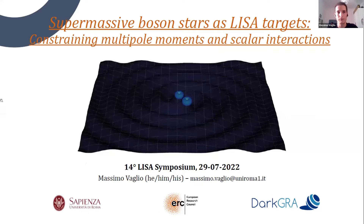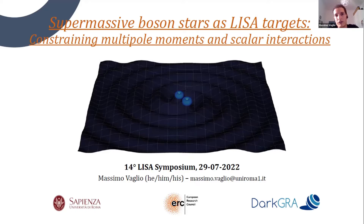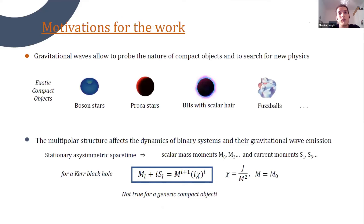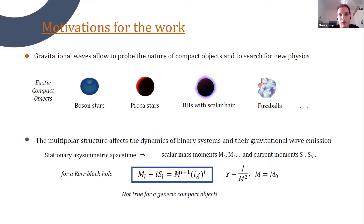Hi everyone, I'm Massimo Vagil from Sapienza University of Rome. First of all, I would like to thank the organizers for the opportunity of giving this talk. I will talk about supermassive boson stars as LISA targets and the possibility of constraining multipole moments and scalar interactions with future observations. The motivation for this work comes from the fact that gravitational waves allow us to probe the nature of compact objects with unprecedented accuracy. This gives us the opportunity to test theoretical models proposed as compact alternatives to black holes — to challenge the black hole paradigm — developed in different theoretical frameworks, each implying the presence of some new physics yet to be discovered.